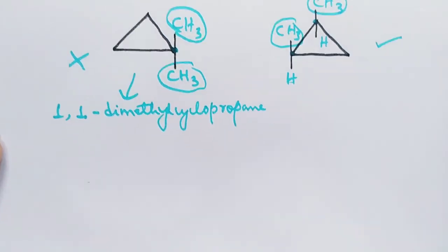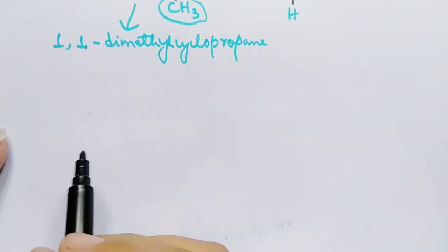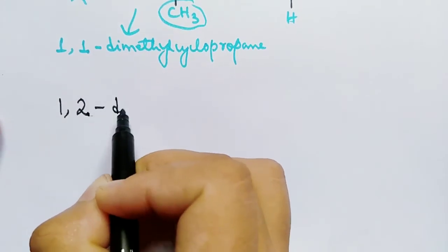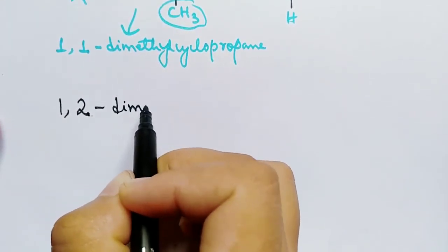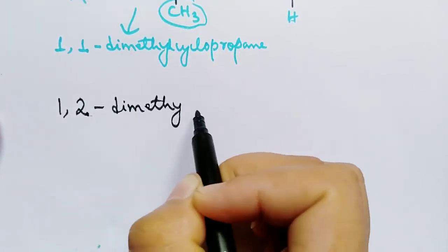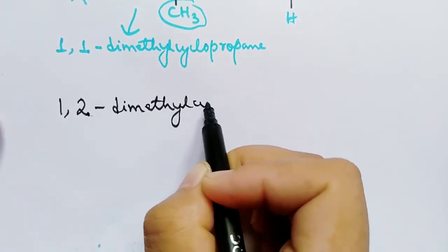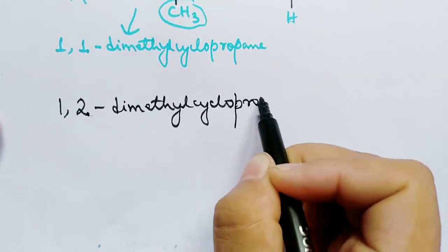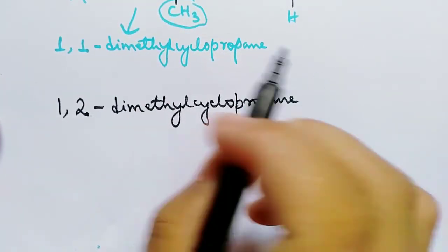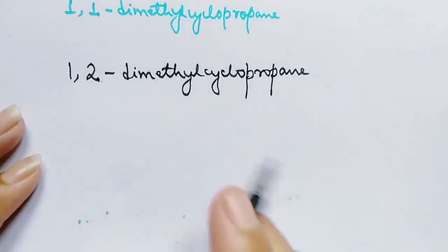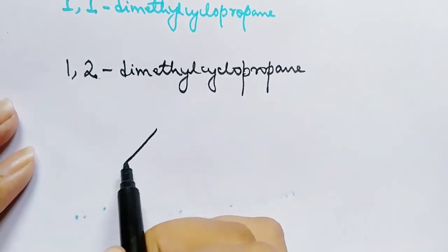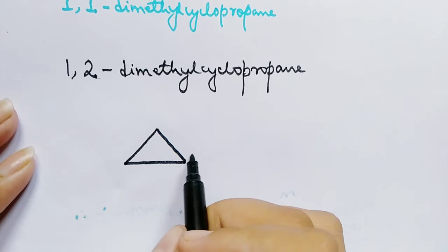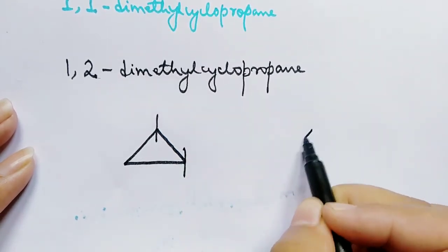Geometrical isomerism is also known as cis-trans isomerism. Consider 1,2-dimethylcyclopropane — this compound exists in two isomeric forms: one is the cis form and the other one is the trans form.